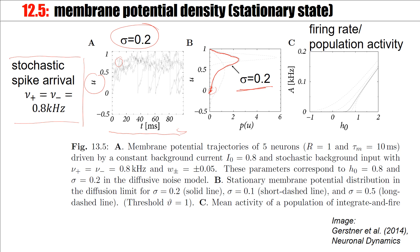If we have enough neurons and the individual contributions of the spikes are relatively small, it is going to be a nice distribution. The density at threshold is indeed zero, because as soon as a membrane potential hits the threshold it is gone and reappears at the reset potential, which was zero here. If we change the standard deviation and make it smaller, we get a higher peak closer to the threshold, with the threshold at 1. For sigma equal to 0.5 we would get the curve shown.